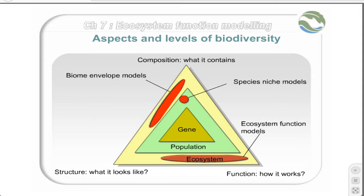Biodiversity can be thought of as having three aspects: composition, structure, and function, as well as three levels: the gene, the population, and the ecosystem. Almost all systematic conservation planning tools focus at the species composition level, where the red dot is in this diagram.